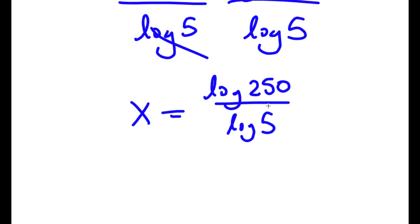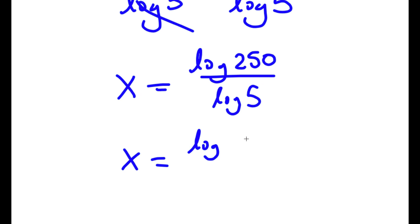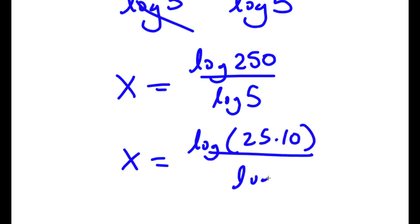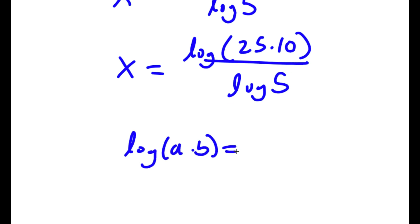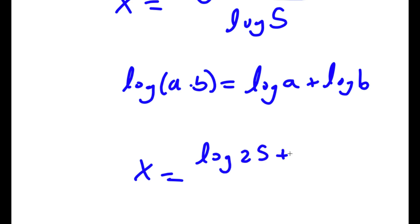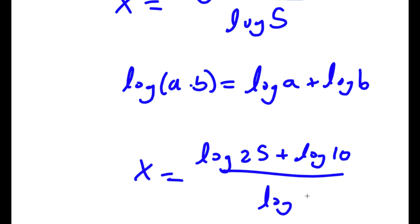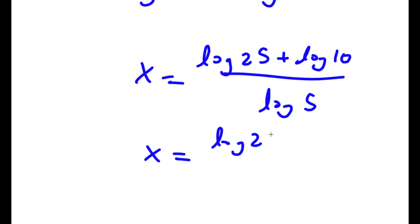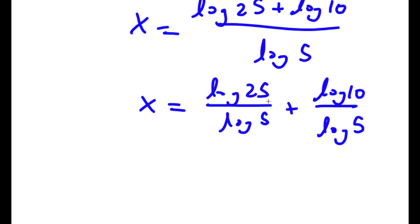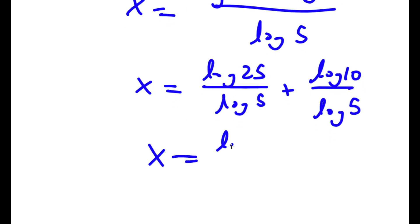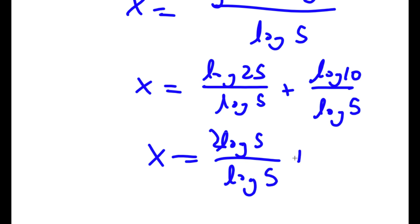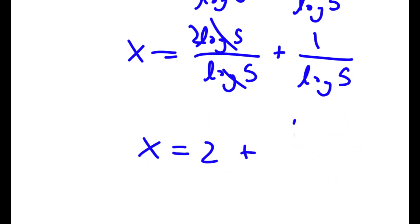Now log of 250 I can rewrite as log of 25 times 10. Using the property log(a times b) equals log a plus log b, this becomes log 25 plus log 10, all over log 5, which equals log 25 over log 5 plus log 10 over log 5. Since log 25 is log of 5 squared, I can move the 2 to the front: 2 log 5 over log 5, and those cancel. So x equals 2 plus log 10 over log 5, which is 2 plus 1 over log 5.